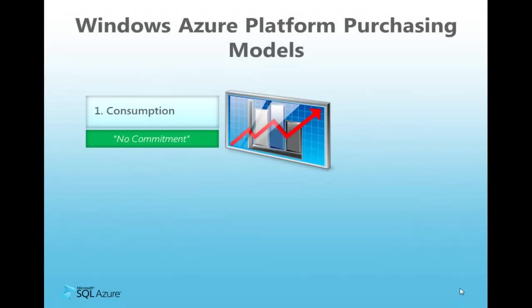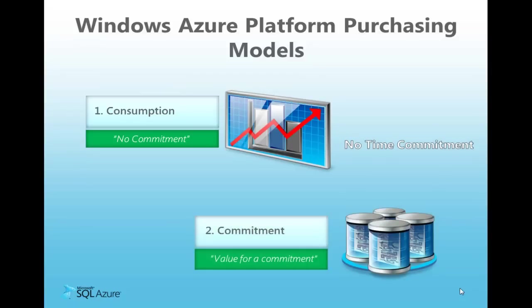When it comes to choosing which type of subscription to purchase, there are two types to choose from when purchasing a Windows Azure Platform subscription. The first is consumption-based. This requires no commitment — you pay only for what you use. The second type of offer is a commitment offer that provides a significantly discounted level of service to use the service over a period of time. Visit the SQL Azure website for a full list of offers and packages that also include other Windows Azure Platform services.